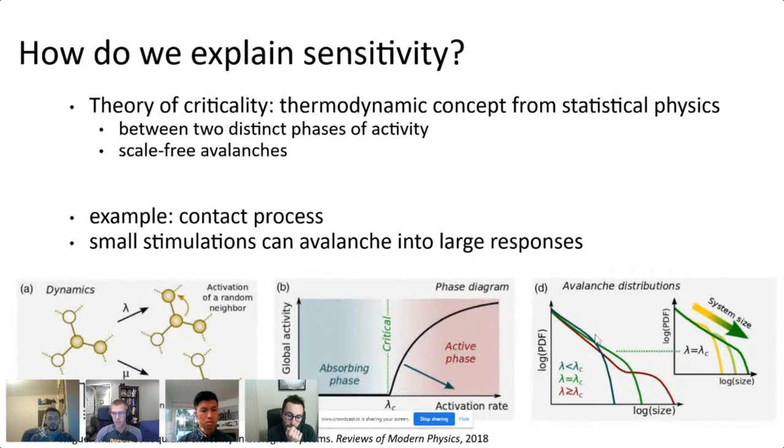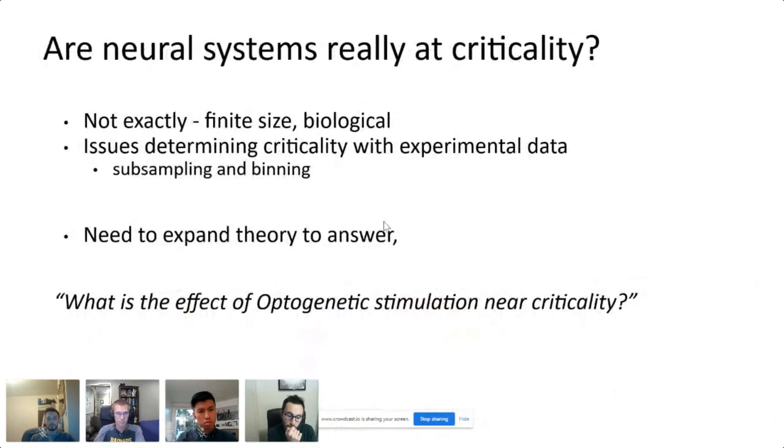So that's what we have: our two phases of activity and scale-free avalanches. The application to the experiment is that these avalanches could serve as a mechanism that small stimulations might be avalanching into large responses. But are neural systems really at criticality? Criticality is a concept from thermodynamics, so you take n to infinity, but neural systems are finite and they're biological.